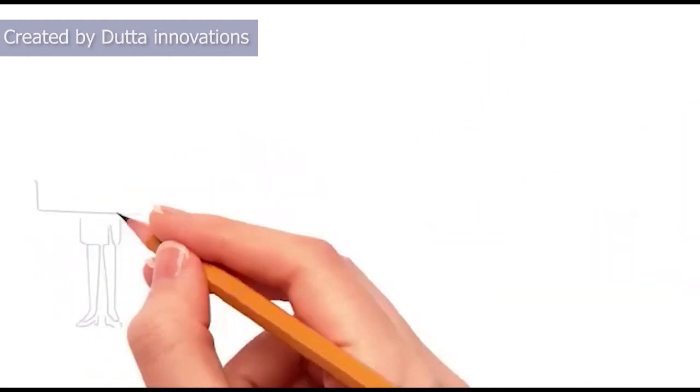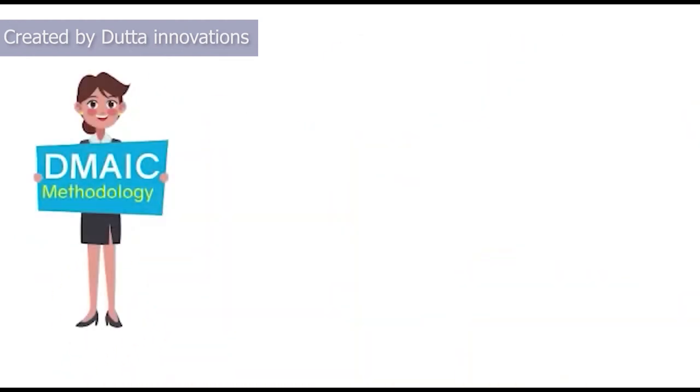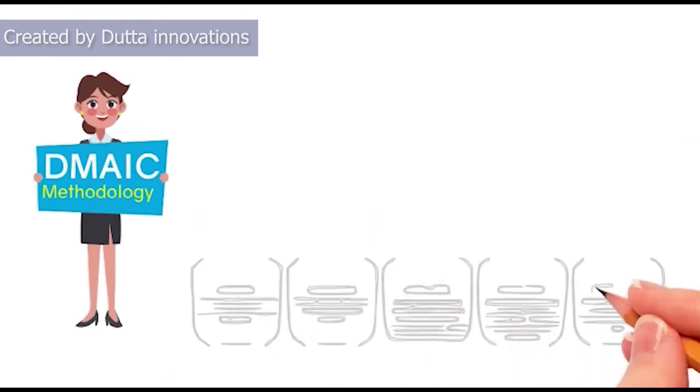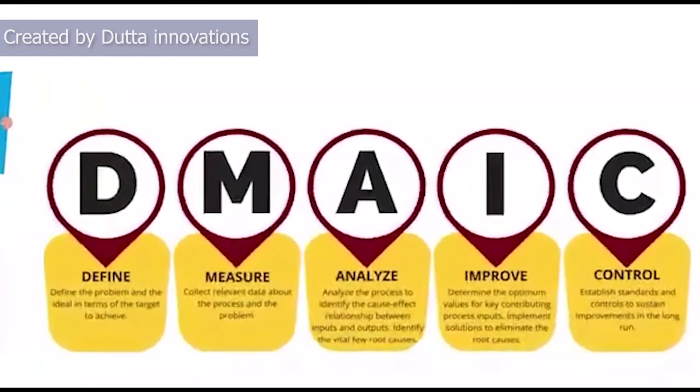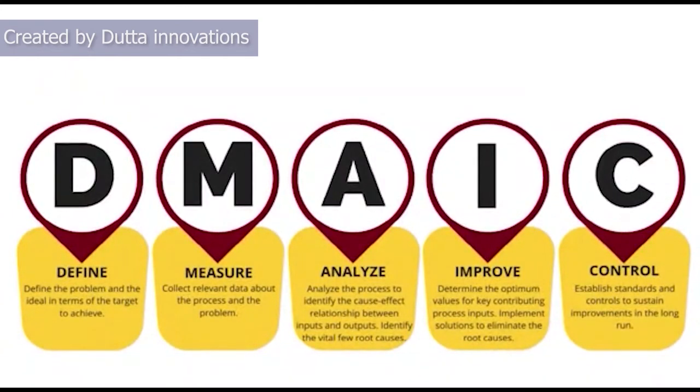Sophia decided to use DMAIC methodology. DMAIC is an abbreviation for Define, Measure, Analyze, Improve, and Control. Let's have a look at these stages individually in the define step.